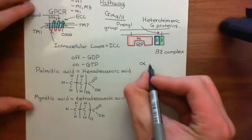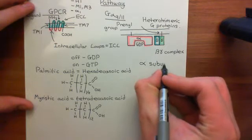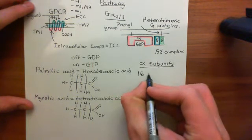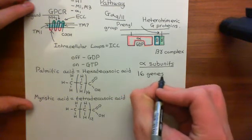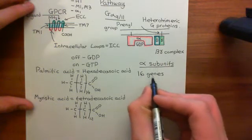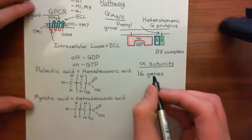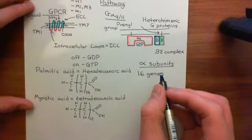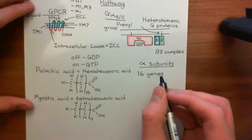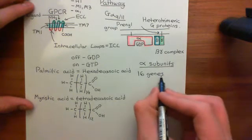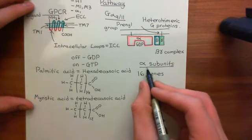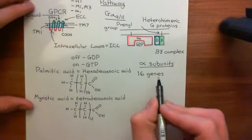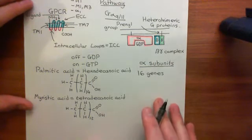Starting with alpha subunits: firstly, there is not just one alpha subunit — there are many different alpha subunits. There are actually 16 different genes which code for alpha subunits, and I mean in a single copy of each chromosome. In a human cell you have 23 pairs of chromosomes, and taking one example of each of those homologous chromosomes, you will find 16 genes coding for alpha subunits.